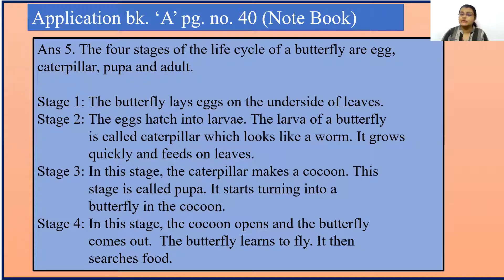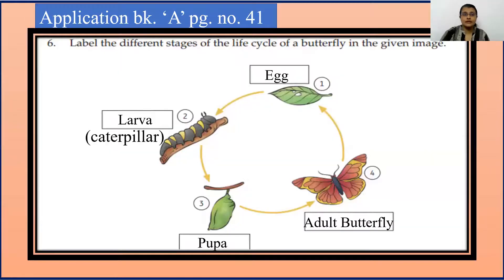It then searches for food. This is how the life cycle of a butterfly goes on. Now we will move to question 6. You have to label the different stages of the life cycle of a butterfly in the given image. First is egg, second is larva — you can see the caterpillar in the image — third is pupa, and fourth is adult butterfly.